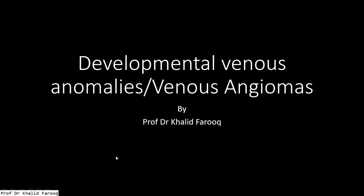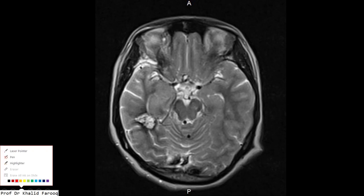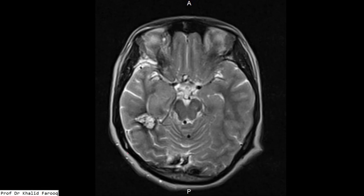Assalamu alaikum. Today we are discussing a case where a patient has presented with the history of fits. We had an MRI brain with both plain and post-contrast components. Here we can see there is a cavernoma in the right temporal lobe which is around two centimeters in size.